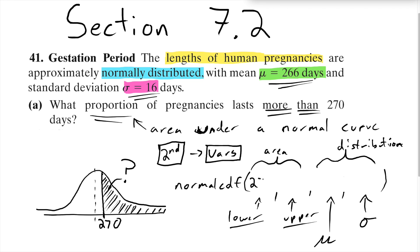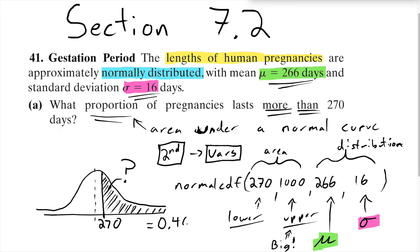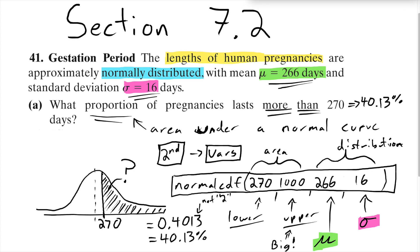The upper number just needs to be something big — I'm going to use 1000. You could use 10,000, just don't use 275; that's not big enough. We put in the mean and standard deviation, and when I evaluate this in my calculator I get 0.4013. So 40.13% of pregnancies last more than 270 days. We found that using normal CDF because it was the area under a normal curve.